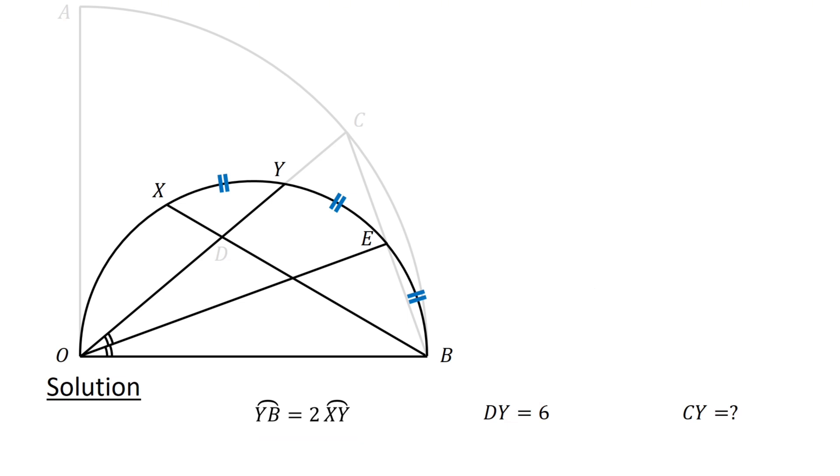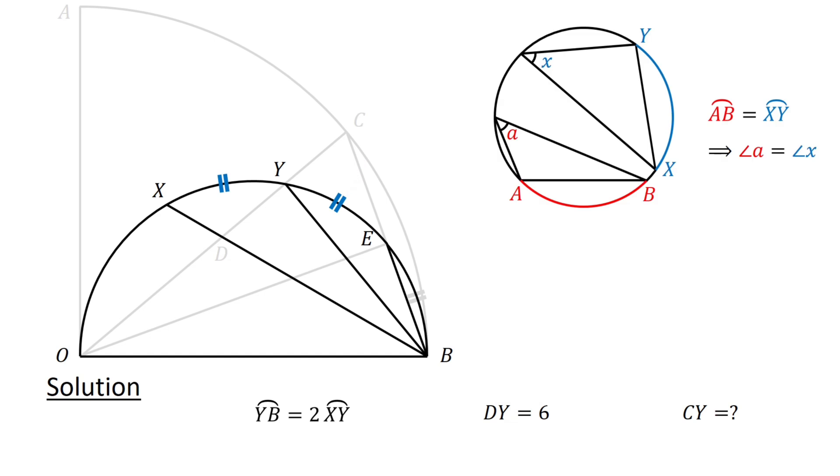Next, connect B to Y and then consider the lines BX, BY and BE and the semicircle. We just showed that arc XY equals arc YE. Recall that equal arcs subtend equal angles at the circumference. Therefore, we have angle XBY equals angle YBE.